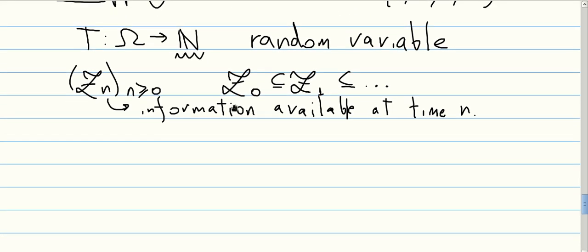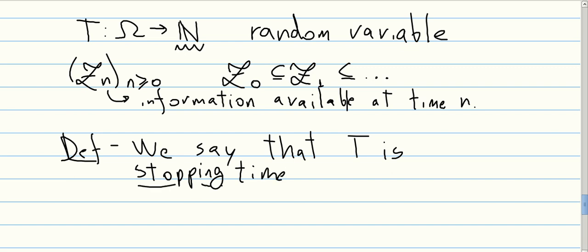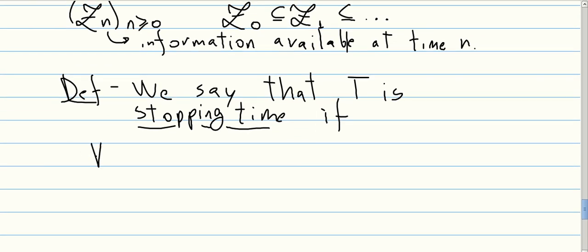And the random variable T, to be called a stopping time, has to have a special relationship with these families here. So, definition, we say that T is a stopping time if, for every N, the event T smaller or equal than N is FN measurable.